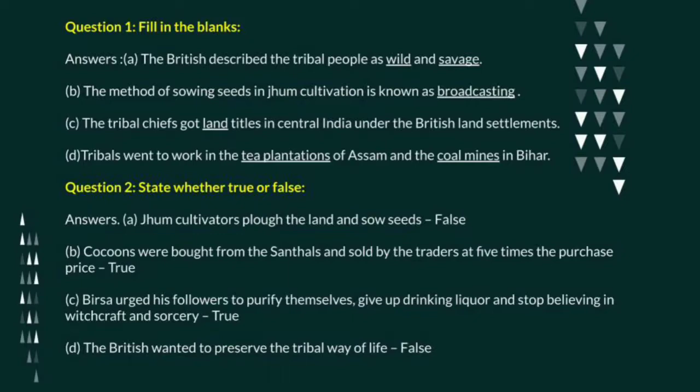Question number two: state whether true or false. Answer a: jhum cultivators plow the land and sow seeds — this is a false statement. Answer b: cocoons were brought from the Santhals and sold by the traders at five times the purchase price — this is true.